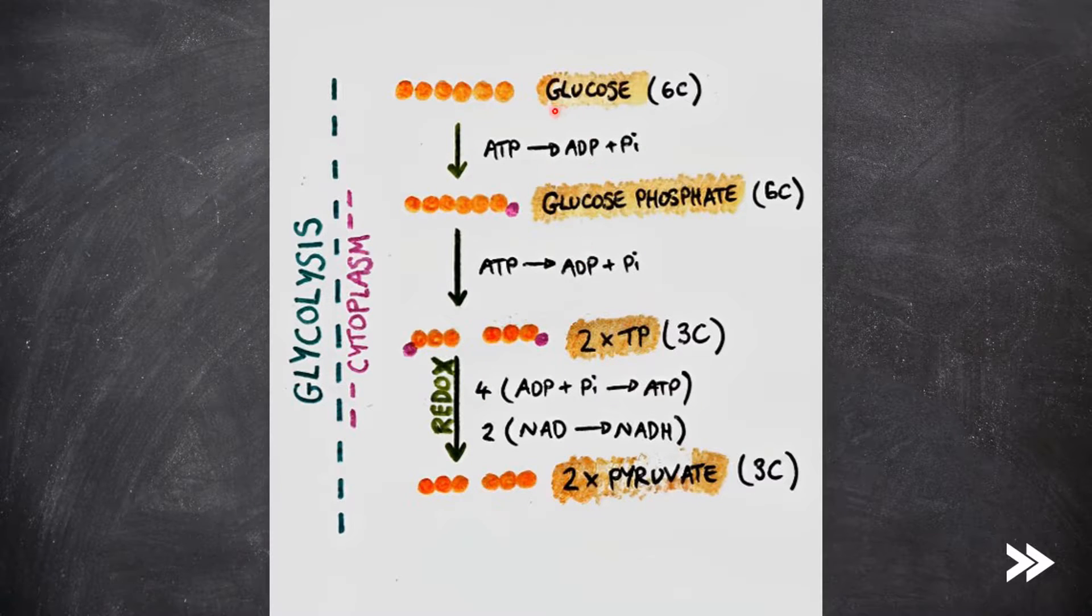First, glucose is converted to glucose phosphate. The phosphate comes from the conversion of ATP into ADP and PI. When this is repeated, a second phosphate is added to the molecule, and the glucose phosphate splits into two triose phosphate, or TP, molecules.